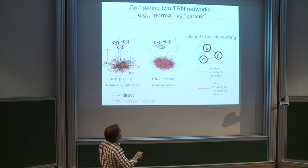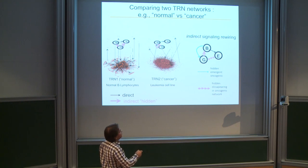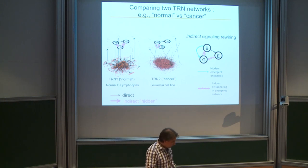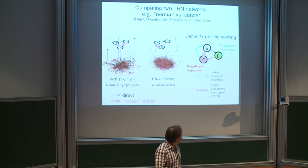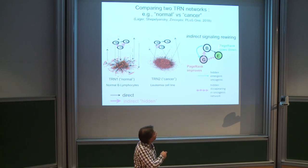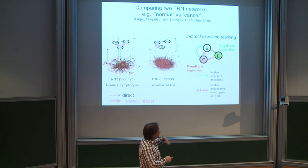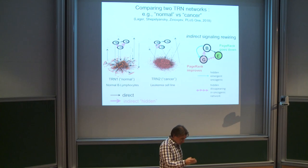By substituting the transcription level, you can study it in normal and cancer cells and see how the structure of hidden connections changes. You can classify hidden interactions that do not change between normal and cancer, those that emerge as a response to cancer, and those that disappear in the oncogenic network. Additionally, you can study how PageRank changes between normal and cancer conditions — some nodes increase their PageRank, meaning they become more regulated in cancer, while others decrease.